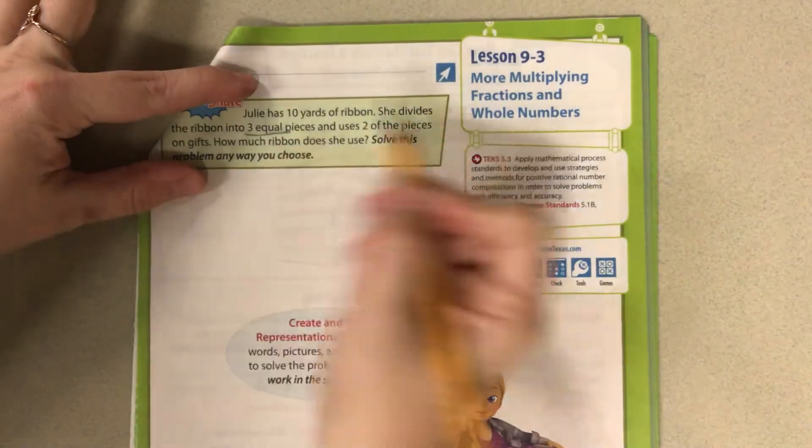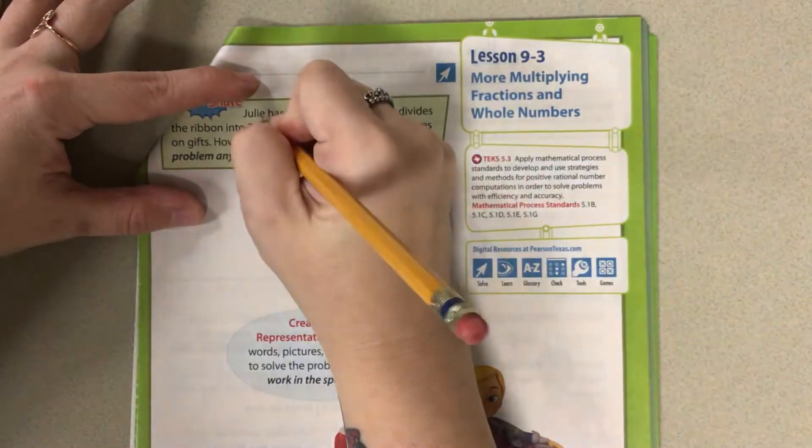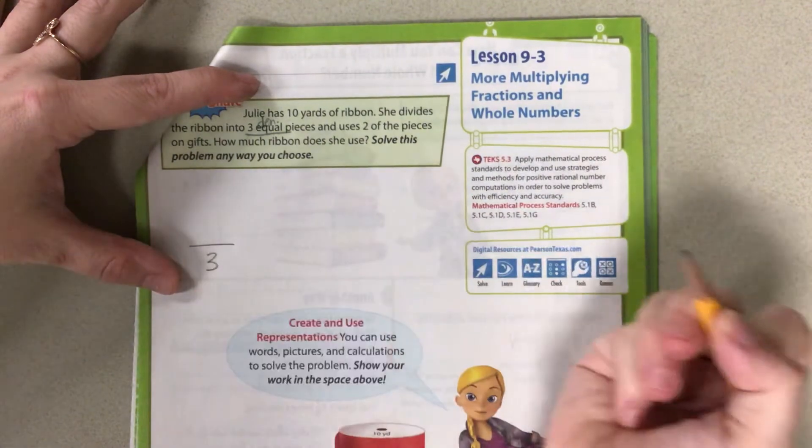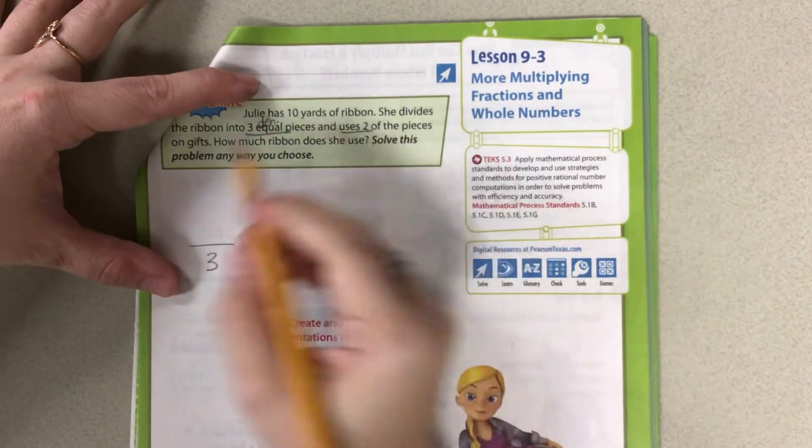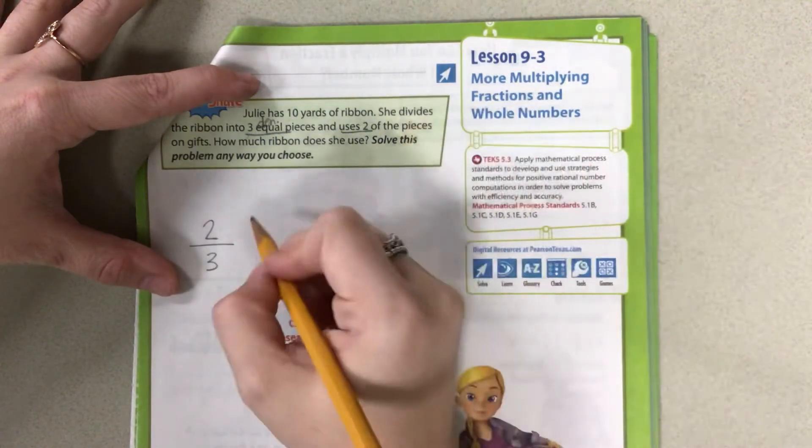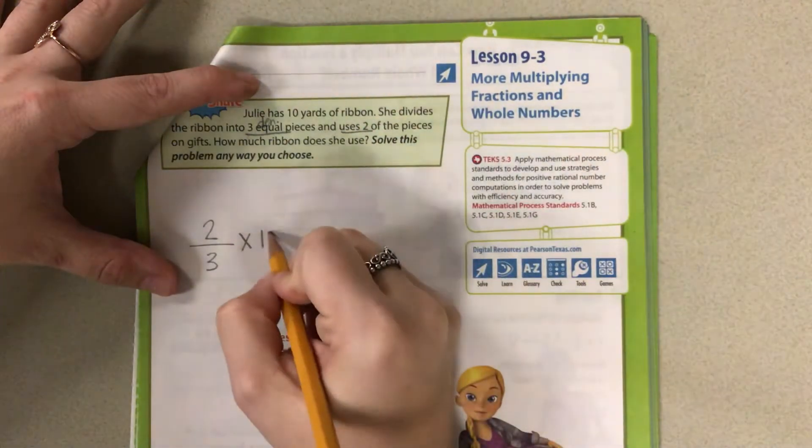So if we have the three equal pieces, that's going to be my denominator because that's my number of groups. And then she uses two of those, so we're going to need two of those.